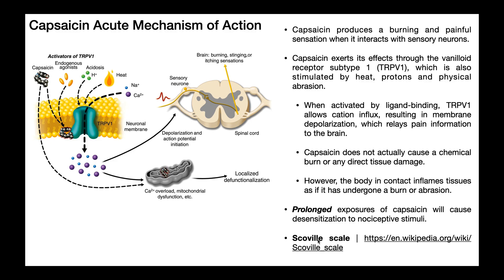The Scoville scale is a way to rank peppers based on how hot they are. How hot a pepper is is really a function of how much capsaicin it has — the more capsaicin, the hotter the pepper. The Scoville scale assigns a number based on capsaicin concentration. On the low end, a bell pepper has a score of zero; the ghost pepper is something like 855,000. I made a fun video on the Scoville scale — I'll put a link in the description.